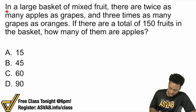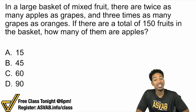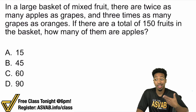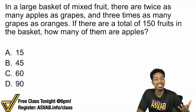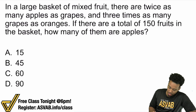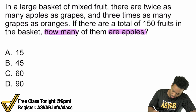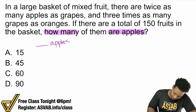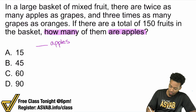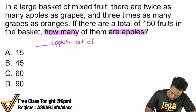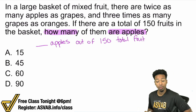Here we go. Your first lesson is that you're not going to read the whole problem. You always want to start off with what you're looking for, no matter what type of problem it is. Ask: what's the point? What are we doing here? Then you look at the information to help you sort things out. So here — if there are a total of 150 fruits in the basket, how many of them are apples? That's what I'm looking for. We're looking for blank apples out of 150 total fruit.